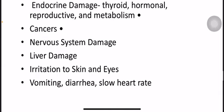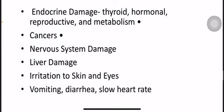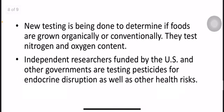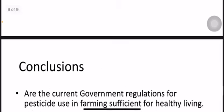Possible health effects include endocrine damage, thyroid, hormonal, reproductive, and metabolic disruption, cancers, nervous system damage, liver damage, irritation to skin and eyes, vomiting, diarrhea, and low heart rate. Current testing is being done to determine whether foods are grown organically or conventionally by testing nitrogen and oxygen content. Independent regulators formed by the US and other governments are testing pesticides for endocrine disruption and other health risks.